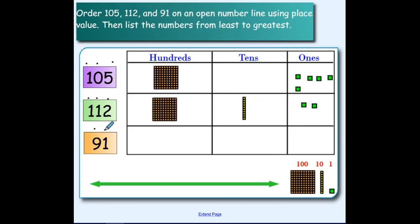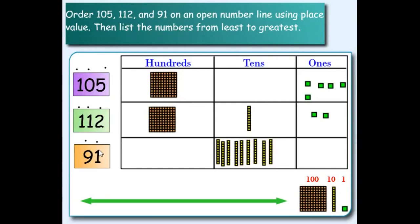91 has two digits. That means it has nothing in the hundreds place, so we're going to leave that box empty. We're going to represent nine tens with nine rods: one, two, three, four, five, six, seven, eight, nine. One one has the same value as one cube.